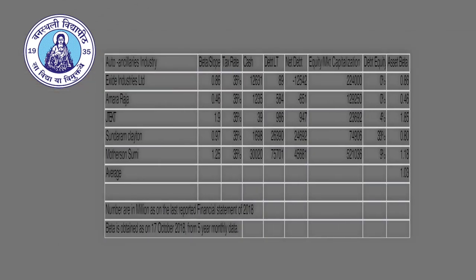To illustrate, consider auto ancillary stocks: Exide Industries, Amara Raja, JTKT (formerly Sona Koyo), Sundaram Clayton, and Motherson Sumi. The first column shows the levered beta — Exide Industries: 0.86, Amara Raja: 0.46 — obtained using 5-year monthly data. A tax rate of 35% is assumed for all Indian stocks. Net debt is calculated as long-term debt minus cash, since cash can always be used to repay debt. Market capitalization data was obtained as of 17th October 2018.